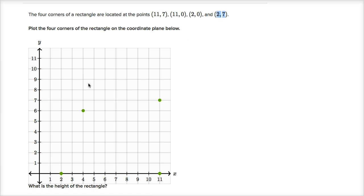Then we have (2, 7). So x-coordinate is two, then we want to move seven up to get right over there, and so you can see the corners of a rectangle right over here.